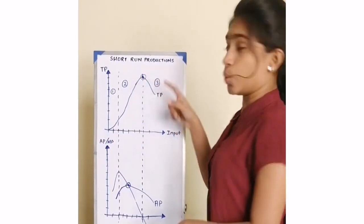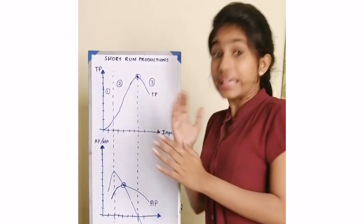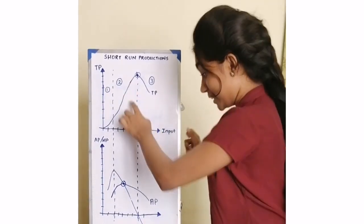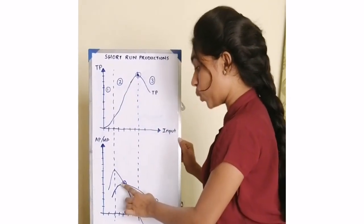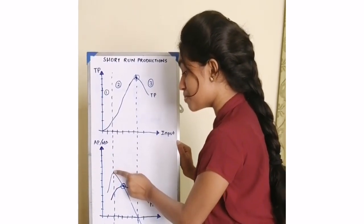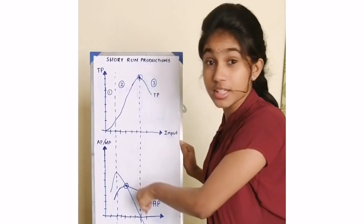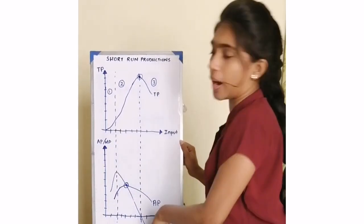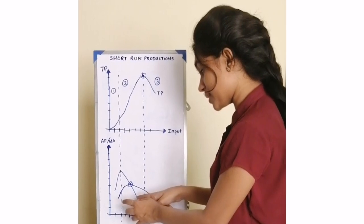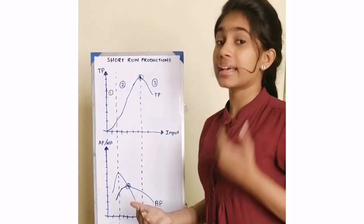In the second stage, the total product will increase but at a decreasing rate. At that point, the marginal product will reach its maximum point and thereafter starts decreasing sharply. At that point, AP will be greater than MP.